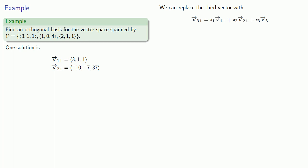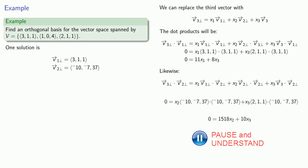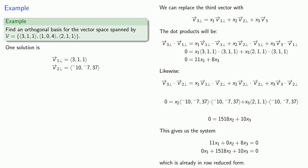And now we need to set up and solve a system of equations. We can get that system from our dot products. So, again, if we take our new vector and dot it with v̄₁⊥, we'll get a nice equation. And likewise, if we take our new basis vector and dot it with v̄₂⊥, we'll get a new equation. And this gives us a system of equations. This is already in row-reduced form, so we can go straight to the parameterization.